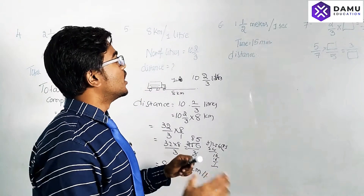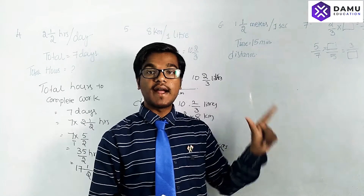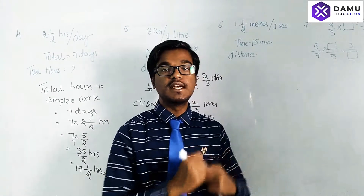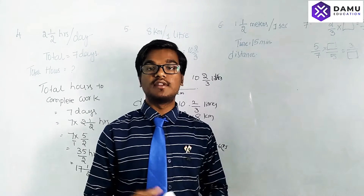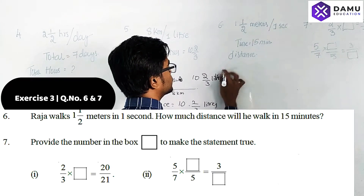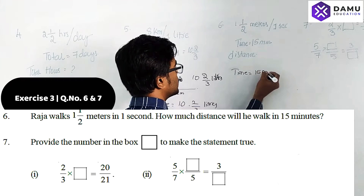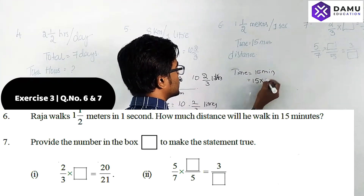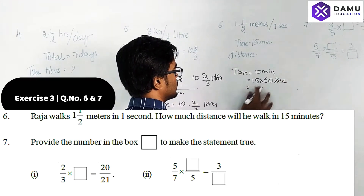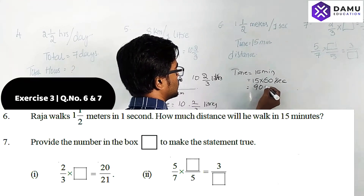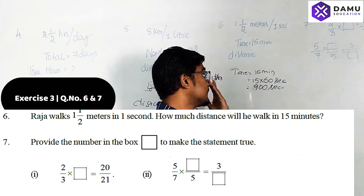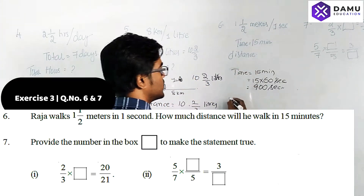Next: Raja walks at 1 and 1/2 meters per second. How much distance does he walk in 15 minutes? For that, we first have to convert minutes into seconds. Time is 15 minutes, so 15 × 60 seconds. One minute equals 60 seconds, so 15 minutes equals 900 seconds.